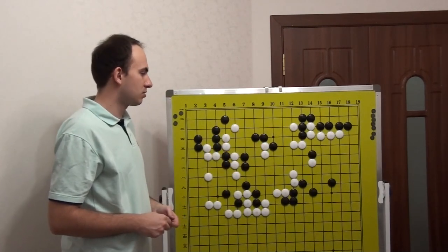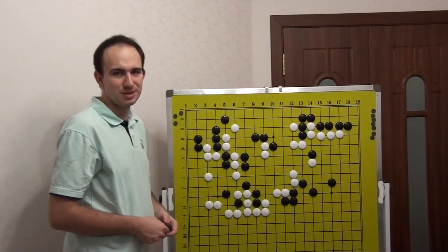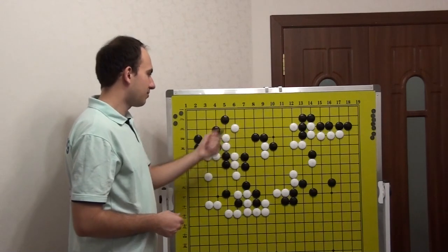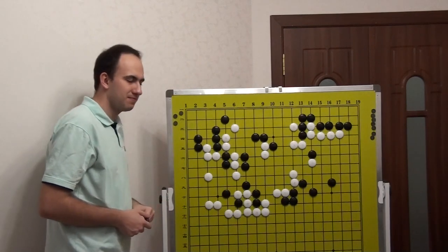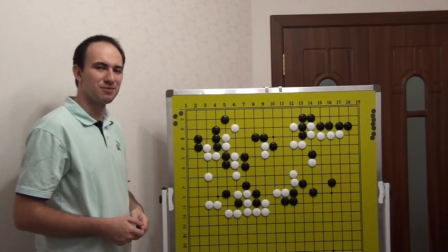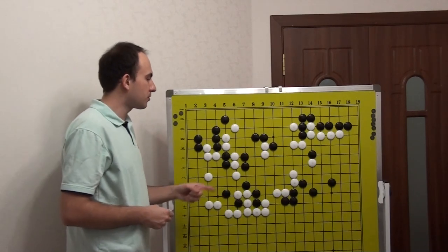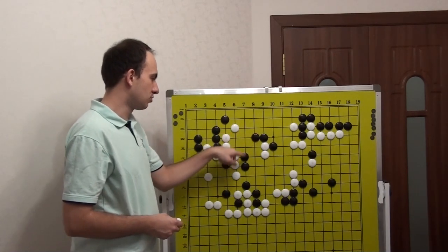And these two stones, not possible to kill. So if Black plays whatever from this side, White will get the center, it's helpful. Yeah, there are also more problems for Black later with this group.